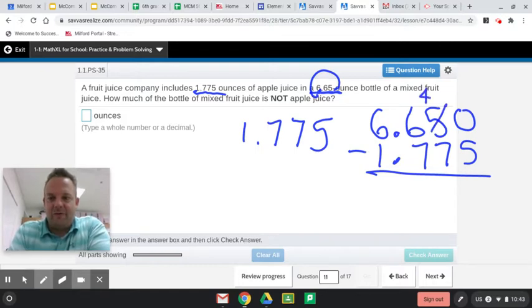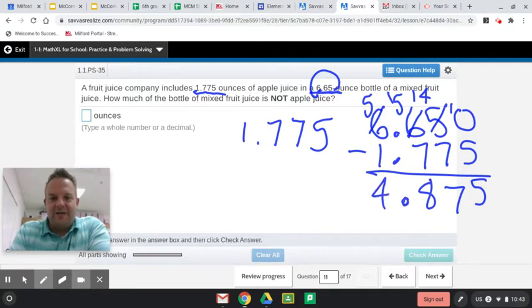We're going to make that a 4 and this is a 10. And 4 minus 7, nope. So we've got to borrow here. Make that a 5 and this is a 14. 14 minus 7 is 7. 5 minus 7, nope. We're going to borrow from the 6. And that becomes a 5. No, 15. 15 minus 7 is 8. Add a placeholder 0. 5 minus 1 is 4. So 4 and 875 thousandths.